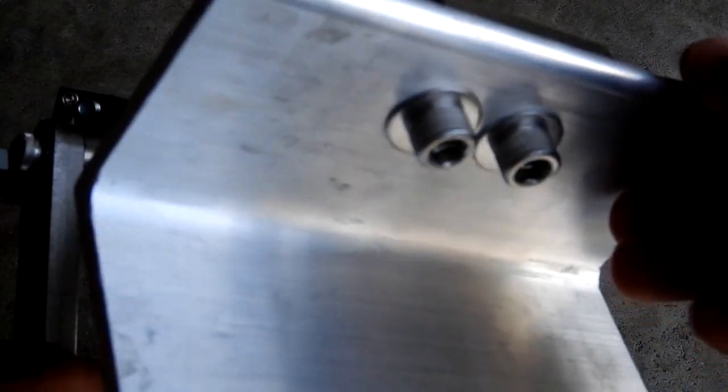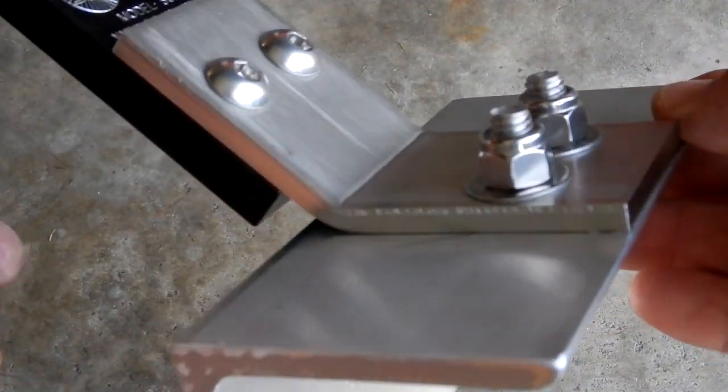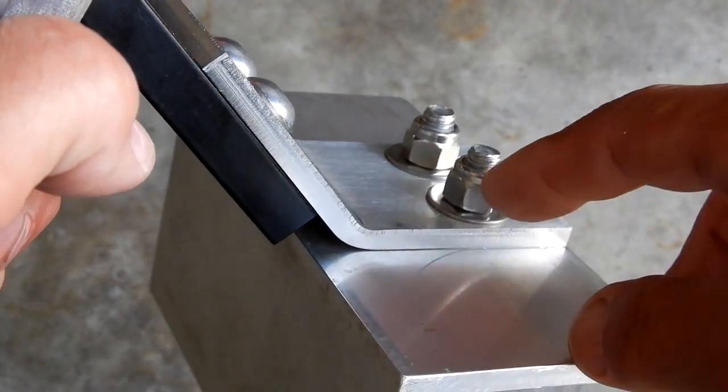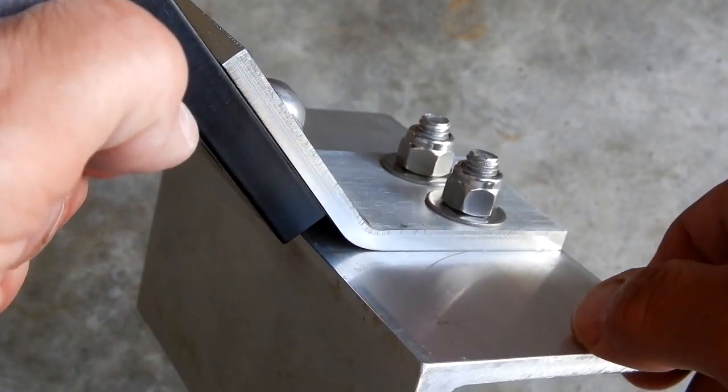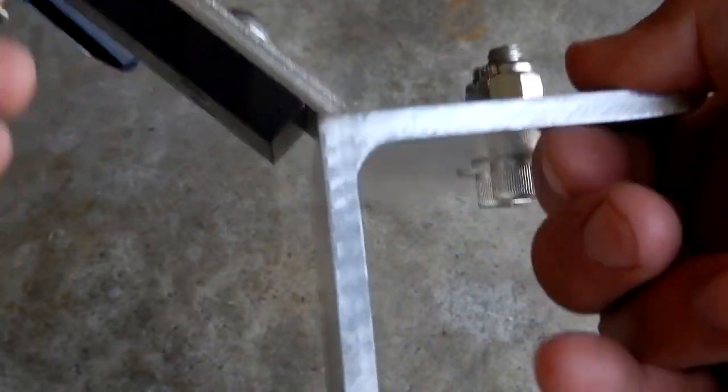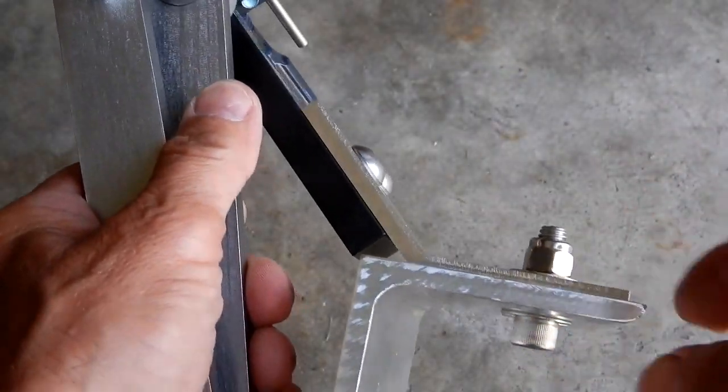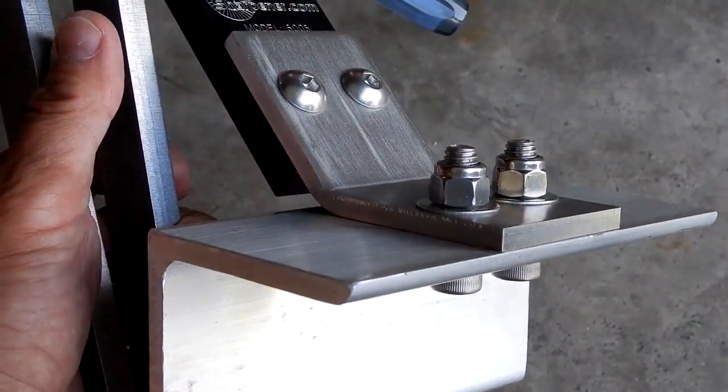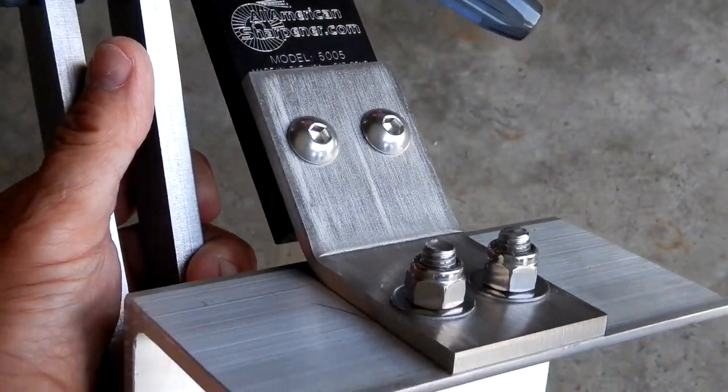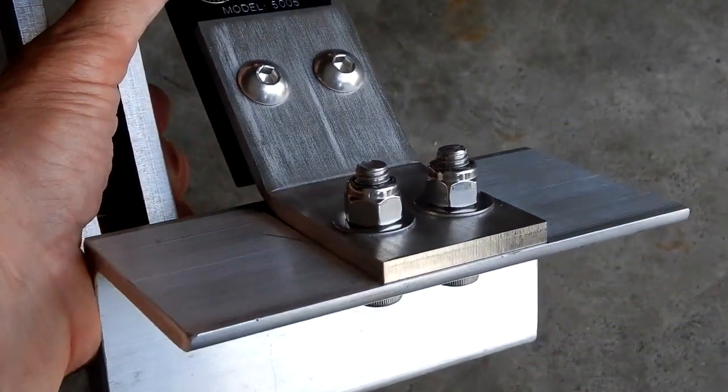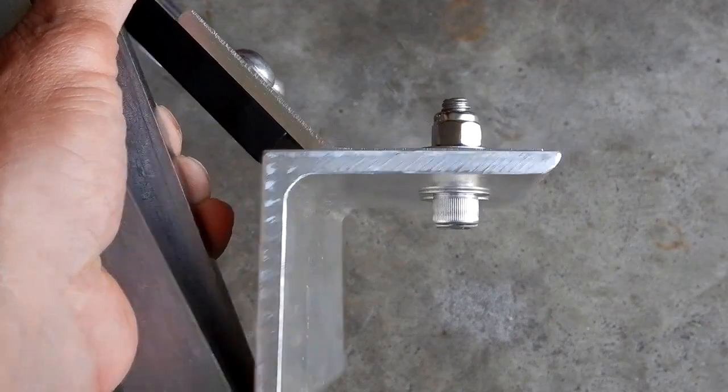Using three-eighths socket head cap bolts, put washers on both sides, and then used nylock nuts. So now this whole unit can be put into a vice, sharpen your blades as required. When you're done, pull the whole thing out and store it away.